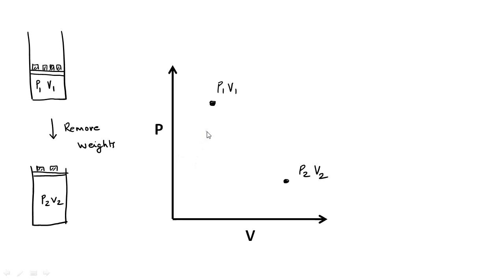Now the question is: what is the state of the system while it is going from one equilibrium state to another? The answer is that the system does not have a thermodynamic state while going from equilibrium state P1V1 to equilibrium state P2V2. As soon as we remove some of the weights, the piston head starts flying up and bounces up and down. This is a period of turmoil for the gas and its density is different in different parts of the cylinder. After a while, the piston settles down and the system reaches a new equilibrium state. So immediately after the weights are removed, the system does not even exist on the PV diagram.